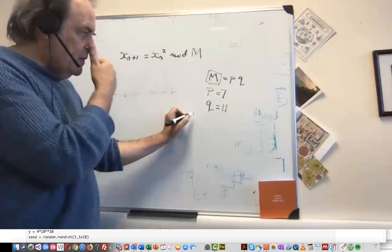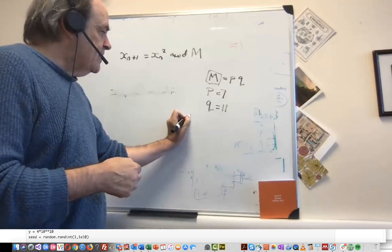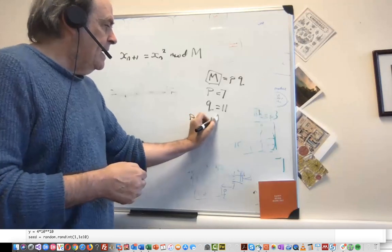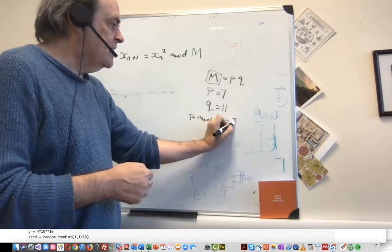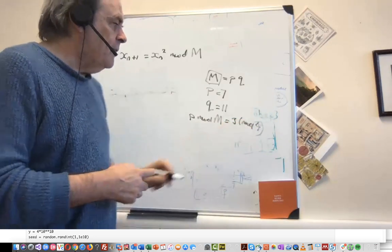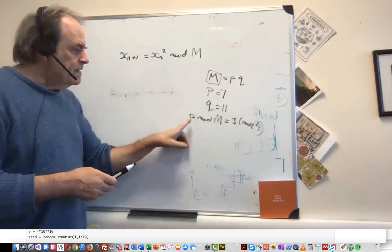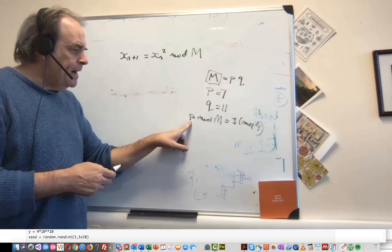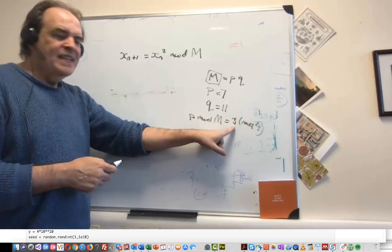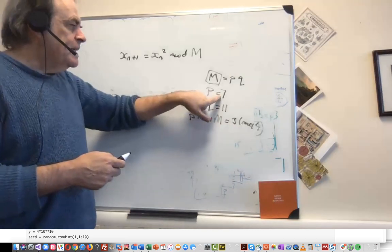The main thing that we need to make sure for these is that p mod 4 is equal to 3, and q mod 4 equals 3, which means that when we divide by 4 we get a remainder of 3.